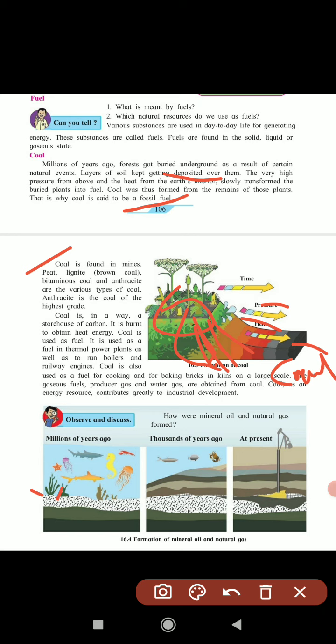Coal is used as fuel for thermal power plants, running boilers, and railway engines. Coal is also used as fuel for cooking and baking bricks for construction. For making gaseous fuels, producer gas and water gas are obtained from coal. Coal as an energy resource contributes greatly to industrial development.